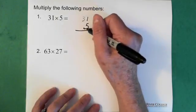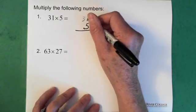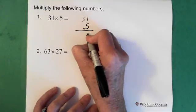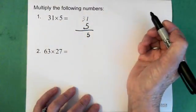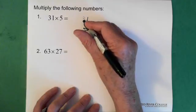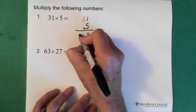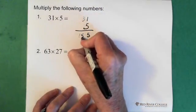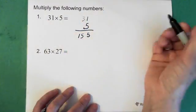So we take 5 and multiply it by the 1, and that gives us 5. So we put the 5 down here. Then we take 5 and multiply it by the 3, and that gives us 15. So then we put the 15 here, and that would be our answer.